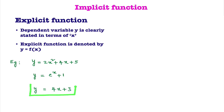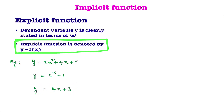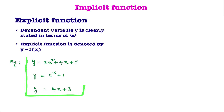Consider y equal to 4x plus 3. By seeing this example, is y clearly specified in terms of x? Yes. Dependent variable y is clearly stated in terms of x. Explicit function is denoted by y equal to f of x. In all these examples, dependent variable y is clearly specified in terms of x.